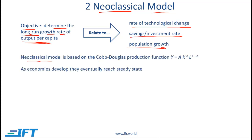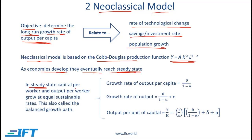The neoclassical model is based on the Cobb-Douglas production function. According to this model, as economies develop they eventually reach steady state. In steady state, capital per worker and output per worker grow at equal sustainable rates — there is a constant rate at which both grow. In a given economy that sustainable rate might be 3%, for example, but in steady state according to the neoclassical model this steady state rate does not change. This is also called the balanced growth path.